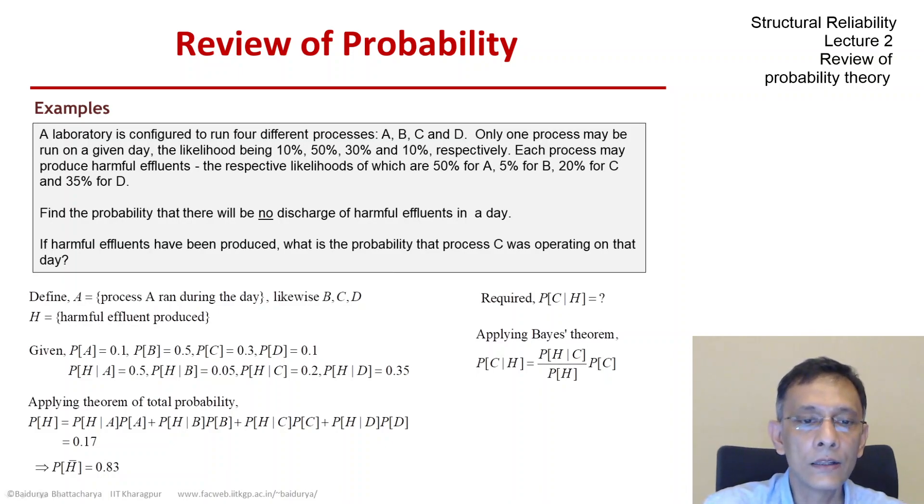And the other two probabilities we already know they are given so if you do the numbers it comes down to 0.353 that given harmful effluents have been detected, it was process C that produced it has a probability of 35.3 percent.